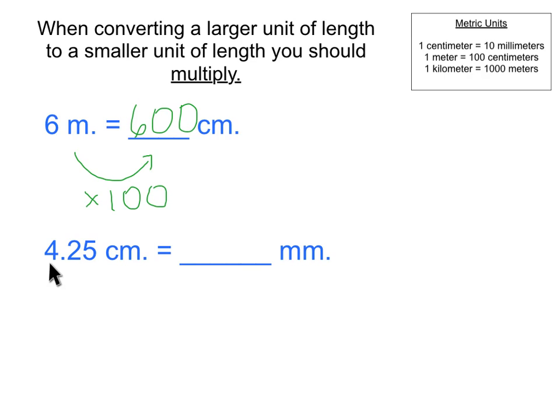Down below, I have 4.25 centimeters equals some number of millimeters. Well, in this case, centimeters is the larger unit of length compared to millimeters, which is a smaller unit of length that makes up centimeters. So I'm going to need to multiply, and I'll be multiplying by the number of millimeters in a centimeter, which is 10. So I have to multiply 4.25 times 10.